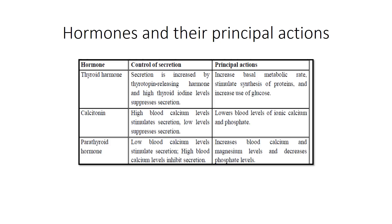Compare calcitonin with PTH: calcitonin decreases both calcium and phosphate, while PTH increases calcium and magnesium but decreases phosphate. Be thorough with this — know which one is increasing and which one is decreasing.